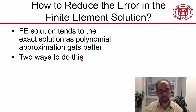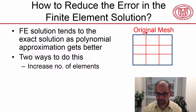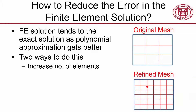There are two ways to do this. The first is to increase the number of elements — this is intuitive to most of us. If this is our original mesh, we can refine the mesh by using twice the number of divisions in each direction, going from nine elements to 36 elements. You'll have four times the number, which means you're representing the temperature field as a superposition of 36 polynomials, whereas here it's a combination of nine polynomials.